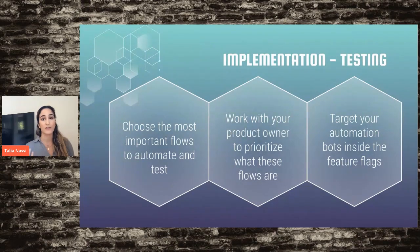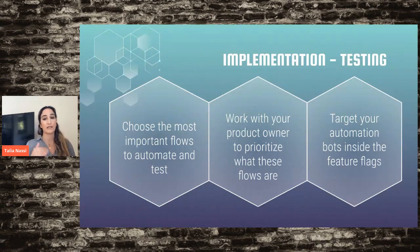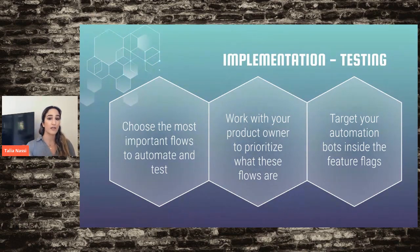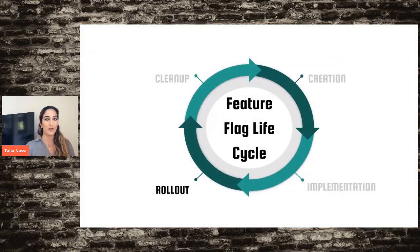In terms of testing with feature flags, common questions are: how do I know which combinations of flags to test and how do I automate this? The biggest thing is to work with your product owner to prioritize which flows bring the most business value. Then use automation users and target them inside whatever combination of flags you need to validate your test cases, so the bot runs through the user flow with those flags on and sees exactly what the user sees.